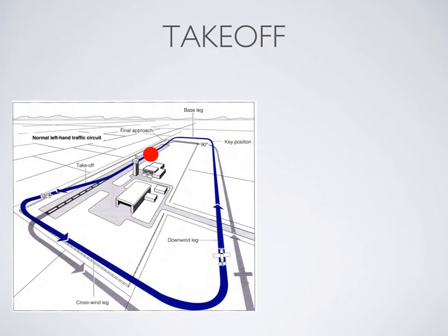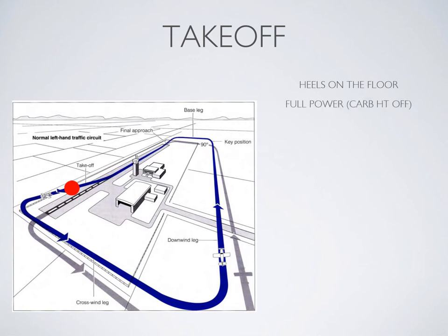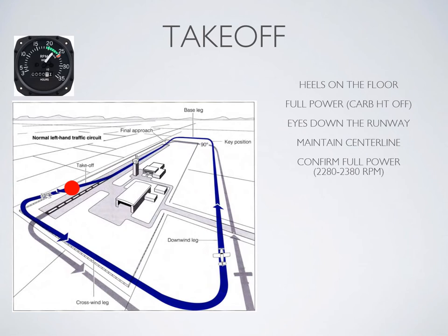For the takeoff, assume you're lined up on the runway and have confirmed the runway heading matches your compass and heading indicator. Add full power with your heels on the floor so you're not on the brake pads. Bring power all the way in over about two seconds. Keep your eyes down the runway watching the center line go underneath the airplane. You'll likely need slight right rudder in a 152 or 172. Glance down briefly to confirm full power — about 2280 to 2380 RPM in a 152.